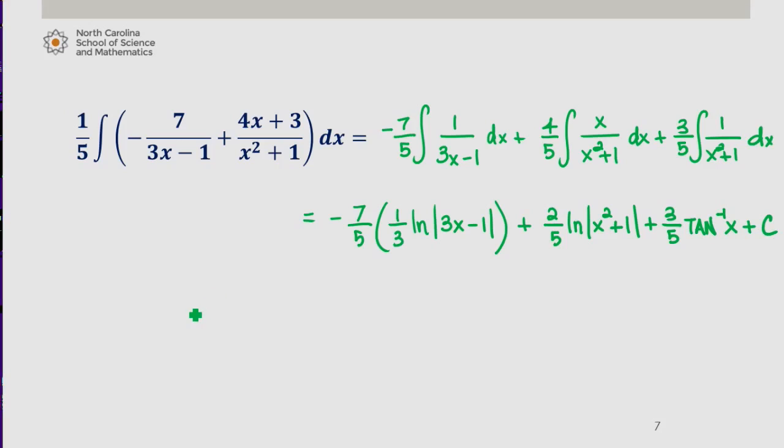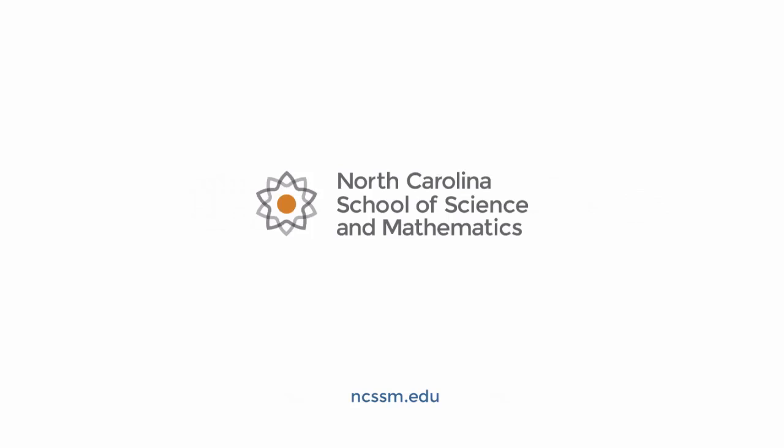This ultimately then gives us negative 7 over 15 times the natural log of 3x minus 1, plus 2 fifths times the natural log of x squared plus 1, plus 3 fifths times inverse tangent of x plus C. Thank you.